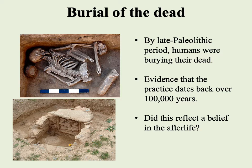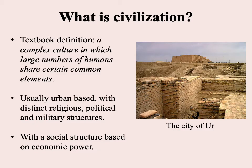Eventually we will have a clear indication of religion, and in fact the first reading discusses the relationship between religion and the beginning of civilization. That brings us to the emergence of civilization. What do we mean by civilization? The textbook definition is: a complex culture in which large numbers of humans share certain common elements — though that does sound rather vague.